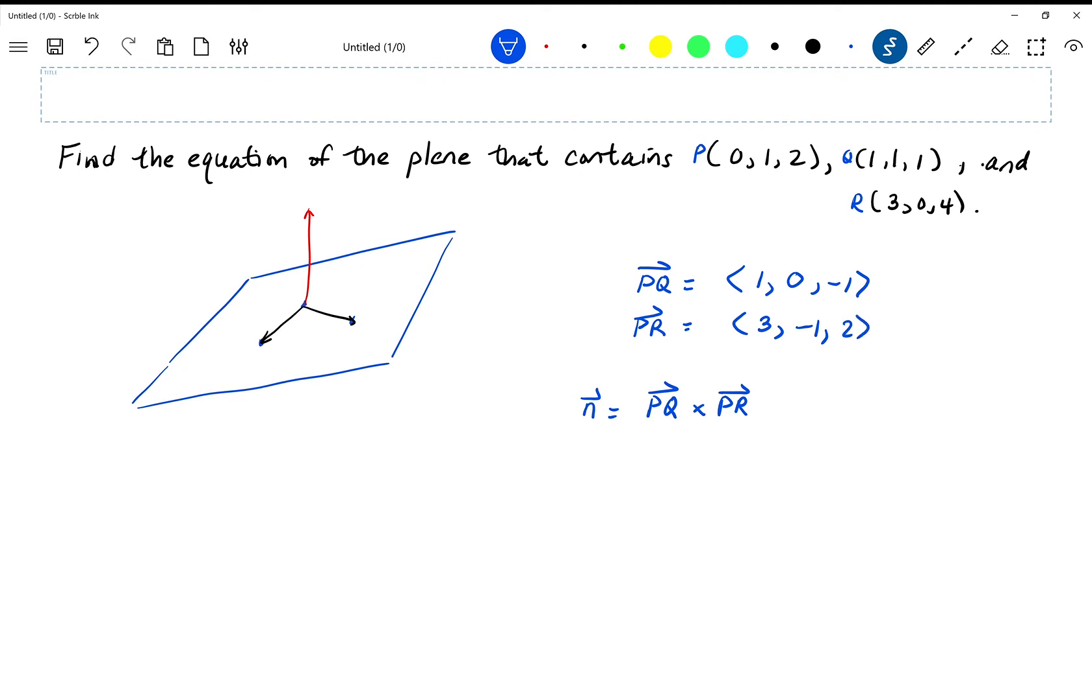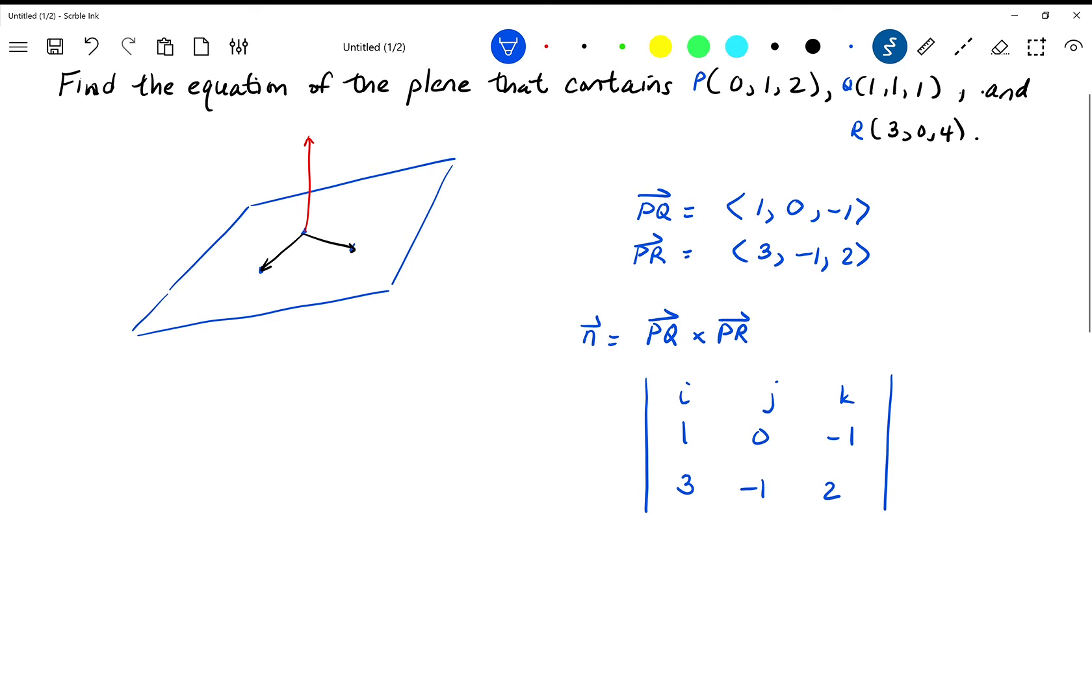So now the normal vector is the cross product between the two vectors. So I have i, j, k, and I have one, zero, negative one, and I have three, negative one, two. And let's just see what happens here. So we're going to have an i, a j, and a k.